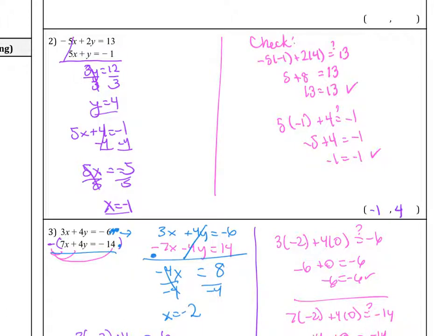So if you tried this out, you would have gotten y equals 4. And then you solve for x, you plug it back in, x equals negative 1. Then you do the check and you find that it works. And so negative 1, 4 is your solution.